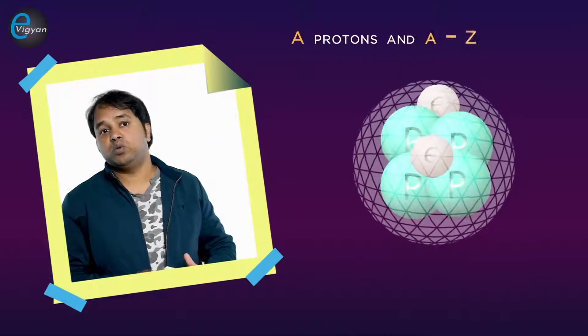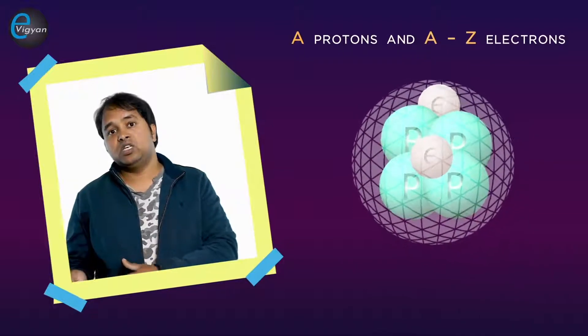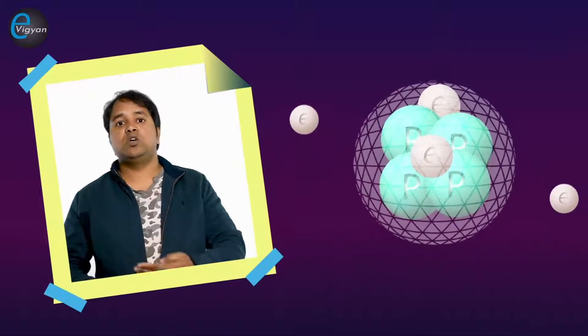So, it seemed plausible to consider the atom as consisting of nucleus made up of A protons and A minus Z electrons, with Z additional electrons outside the nucleus to make the entire atom electrically neutral.